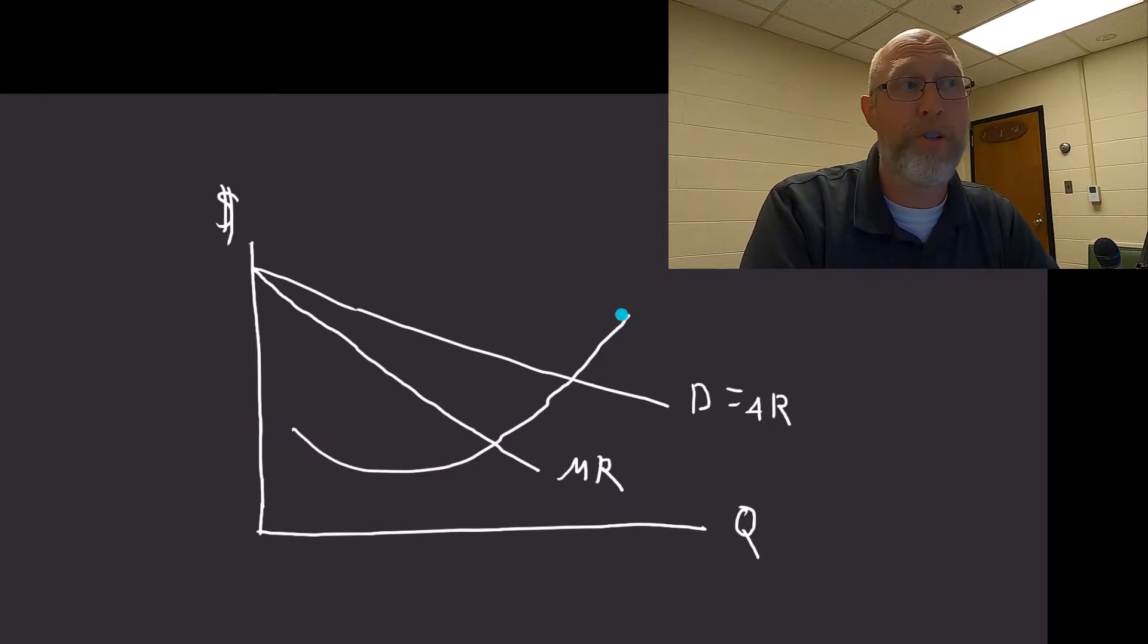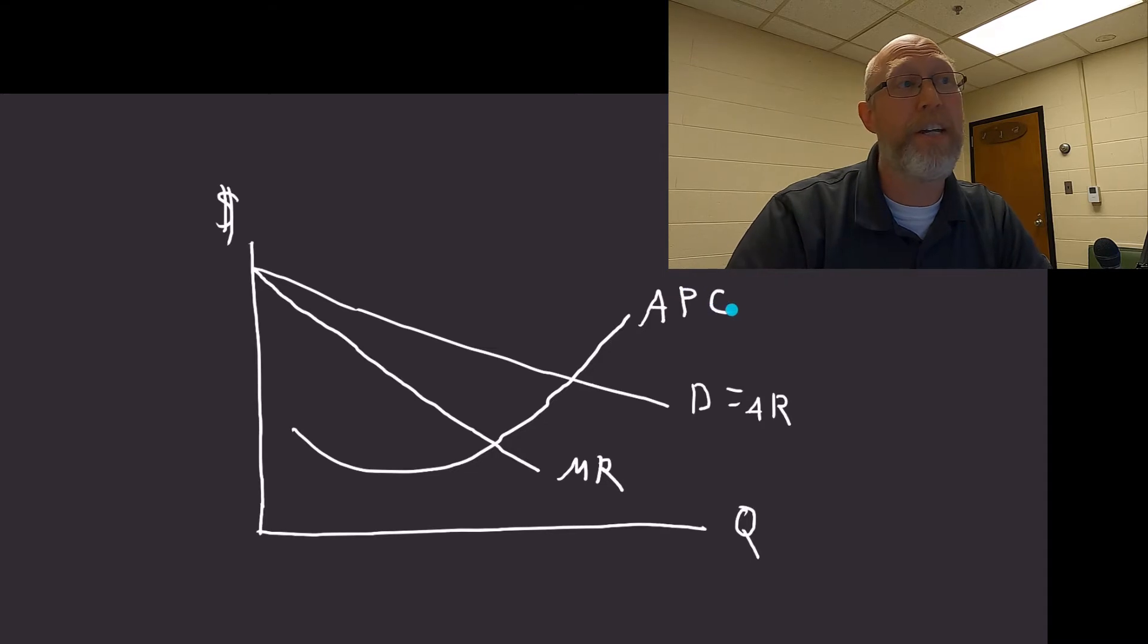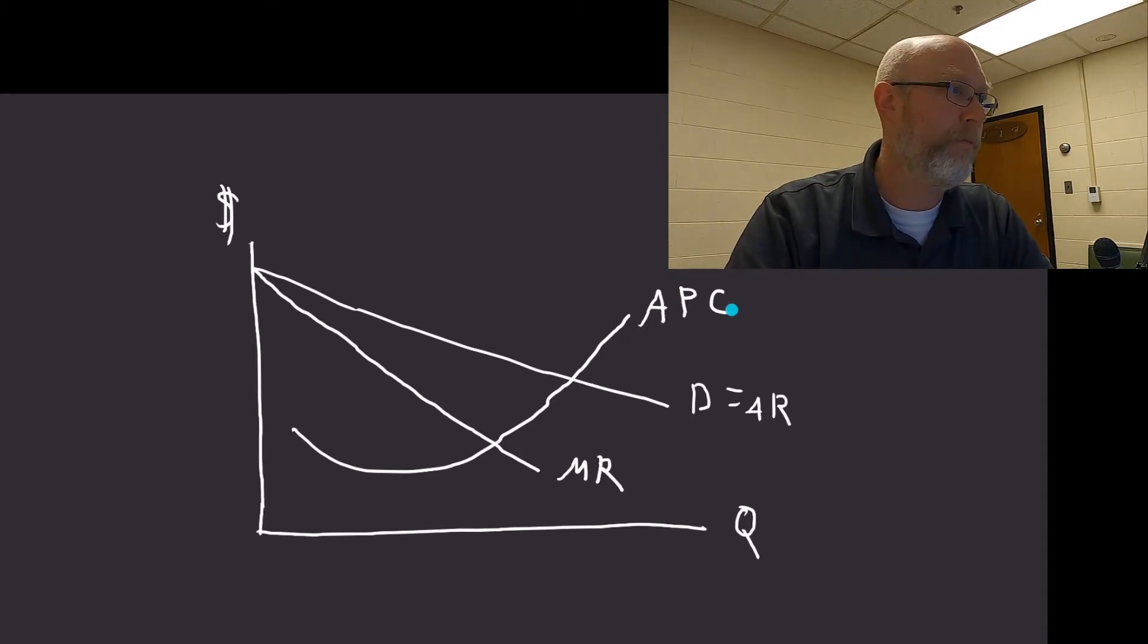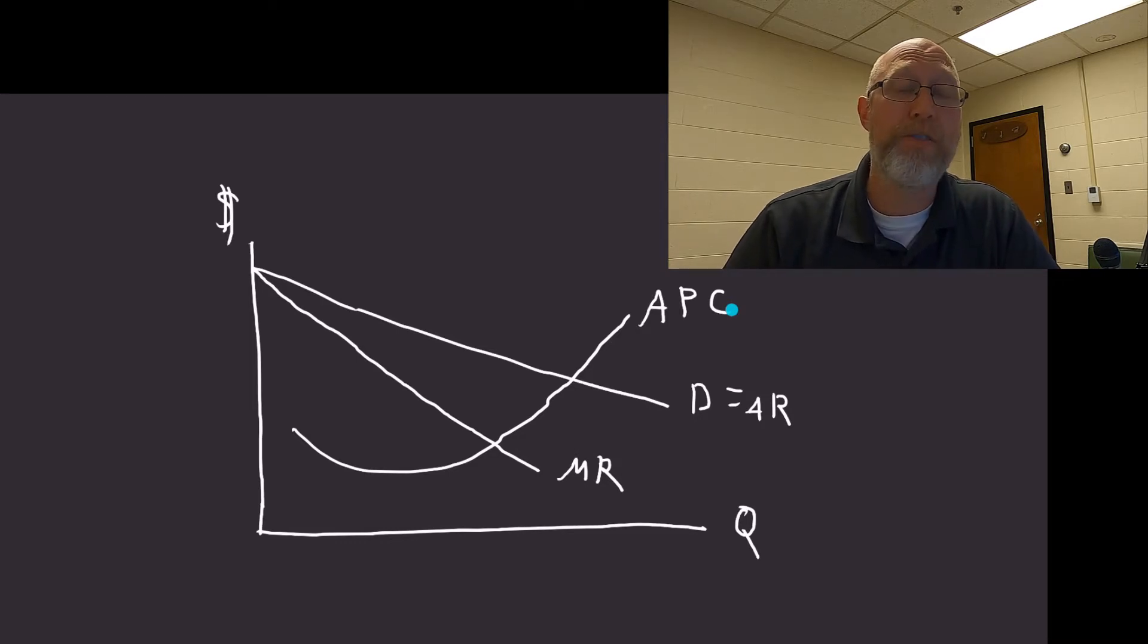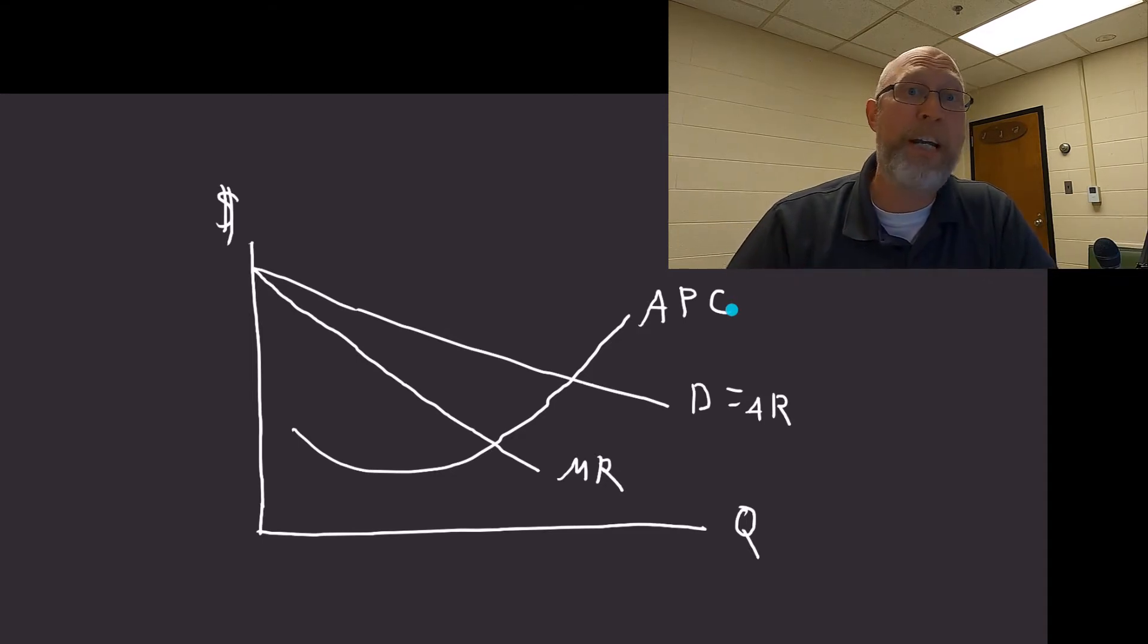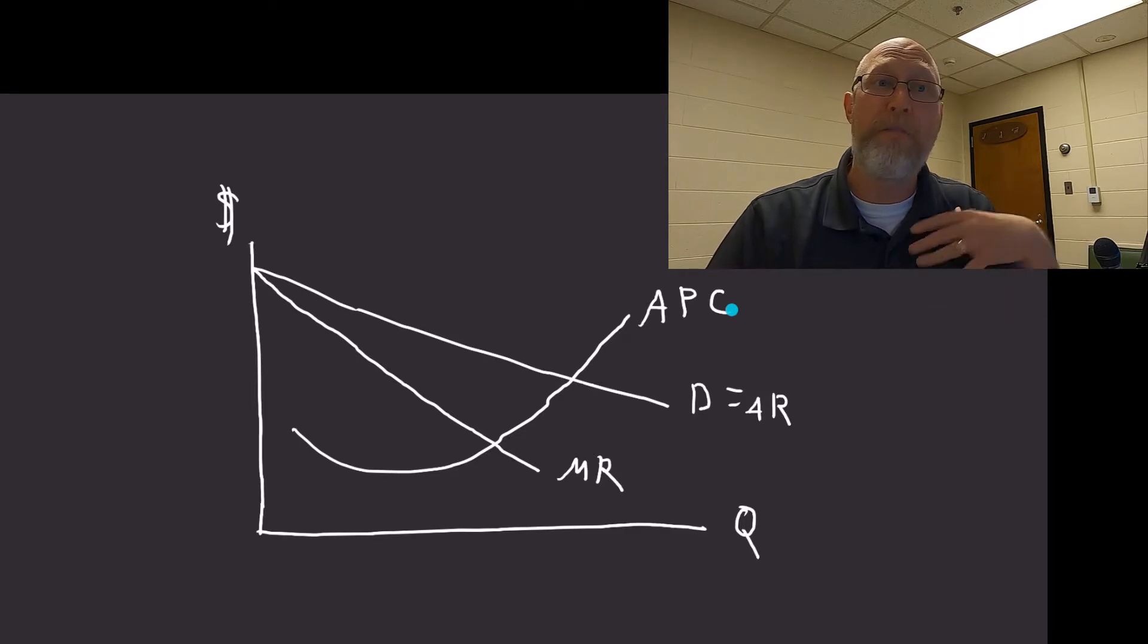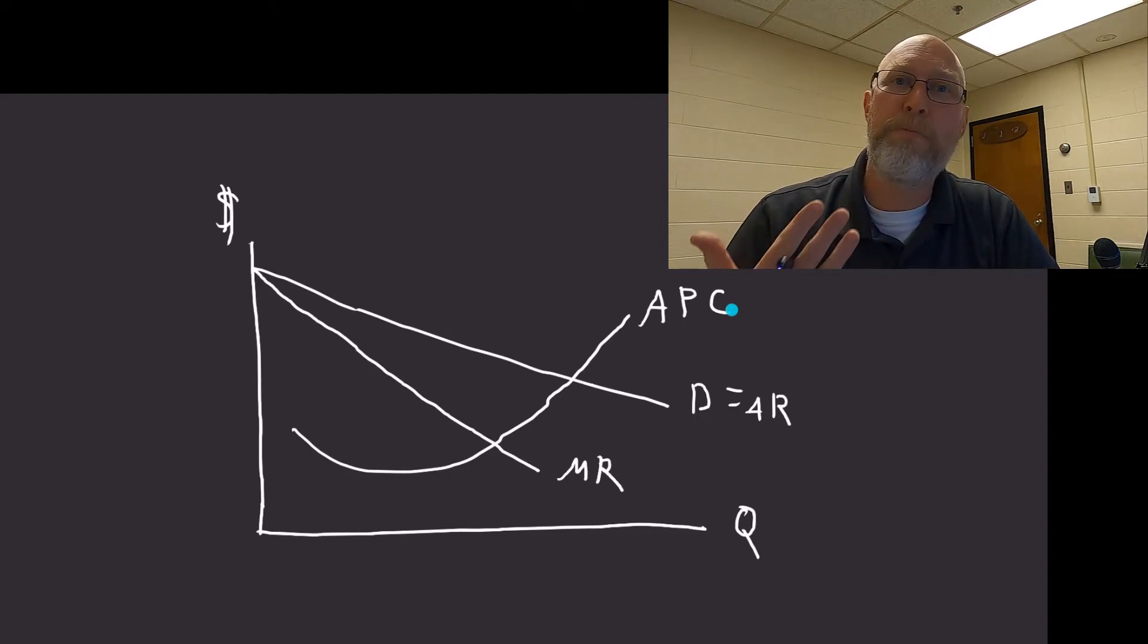Normally we would call this average total cost, but we're going to call it APC, which stands for average production cost or average processing cost. The logic here is that APC is how much it costs to process the good. Imagine a grain elevator that's going to buy corn from a farmer, put the corn in a grain bin, maybe dry the grain, run the fan so the grain stays fresh, and then sell that to somebody else. This is a very special type of cost curve. It's not the average total cost curve. This is what it costs to process the product.